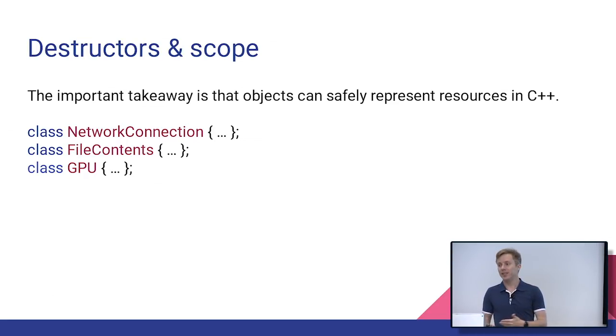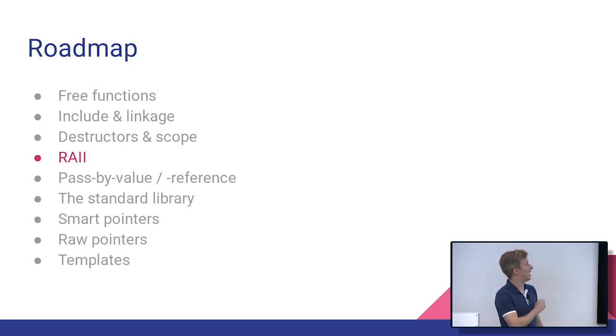So the idea here is anytime you want to represent a resource, you now have the ability to do that. I gave examples network connection file. GPU is the one I'm going to use because that is less likely to throw an exception. And in Chrome code, we don't use exceptions. So it kind of fits the slides better. For this next topic, RAII.